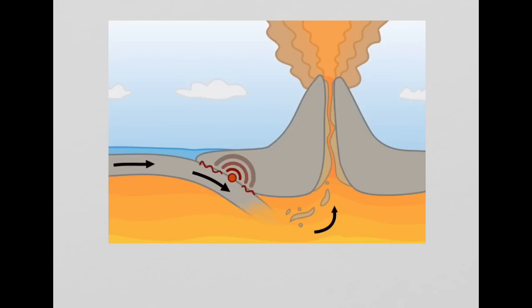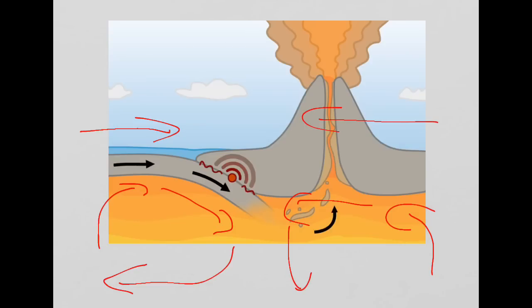The convection currents will be operating like so to produce plate movement in this direction. We will also have this second plate moving like so in this direction.